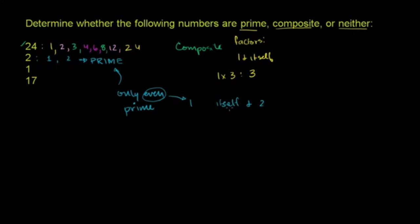So by definition, it's going to have 1 and itself and something else, so it's going to be composite. So 2 is prime; every other even number is composite.